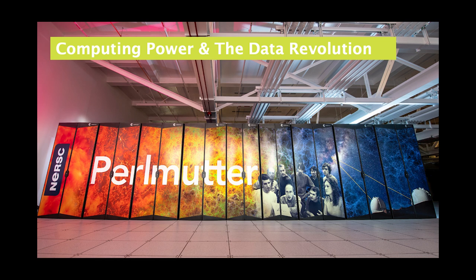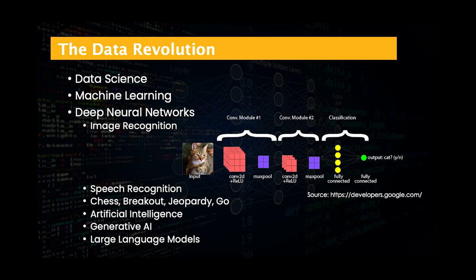Exascale computing is also reaching the estimated processing power of the human brain at the neural level. The result is that problems which were until recently beyond our ability to compute are now possible, and as processing power continues to advance, we will be able to simulate increasingly complex systems with higher fidelity and granularity. At the same time, we are also seeing exponential increases in the amount of data that is available and can be stored and processed. This has allowed breakthroughs in techniques used to model and analyze data. New machine learning techniques, such as deep neural networks and artificial intelligence, allow computers to learn from data and perform tasks that were considered out of reach until recently.